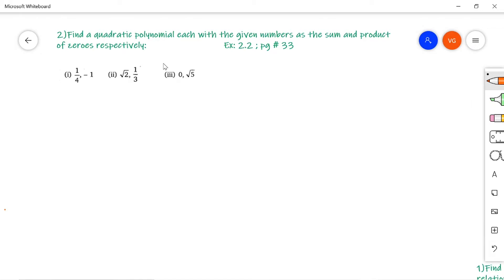Here the first problem gives 1/4 and -1. The first number is the sum of zeros, so α + β = 1/4, and the product of zeros is αβ = -1.